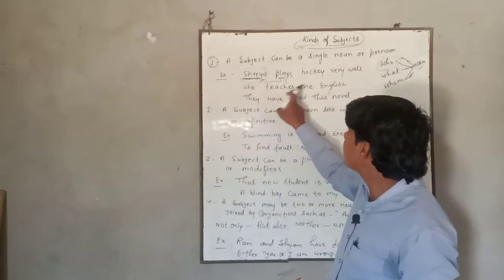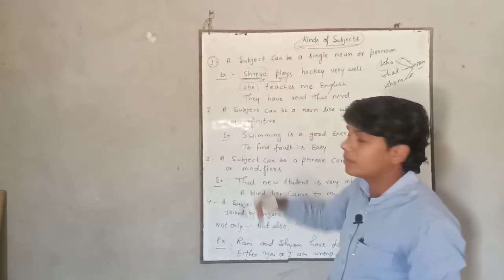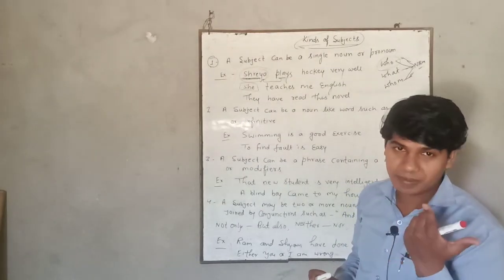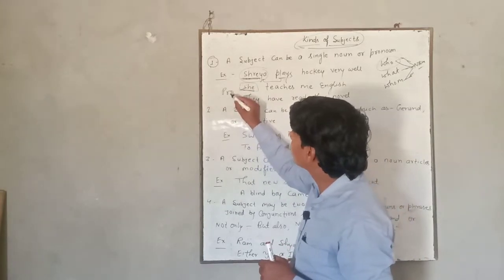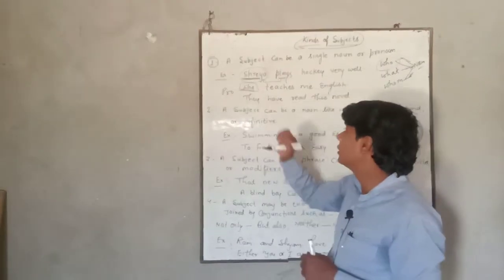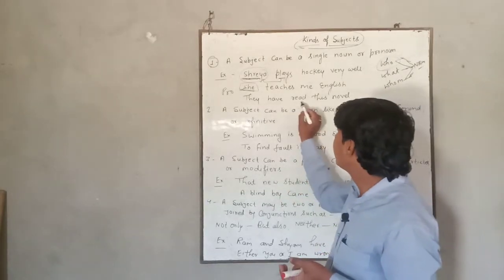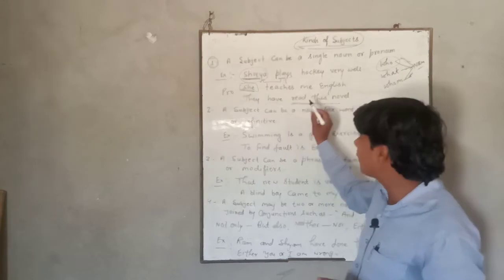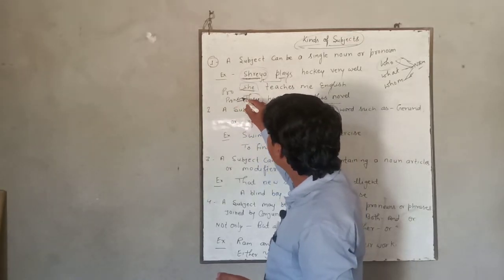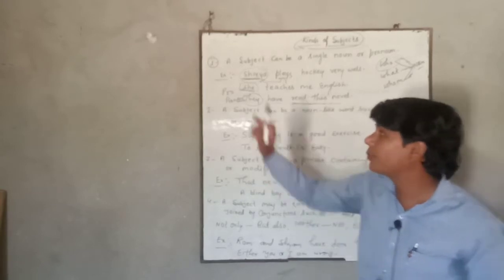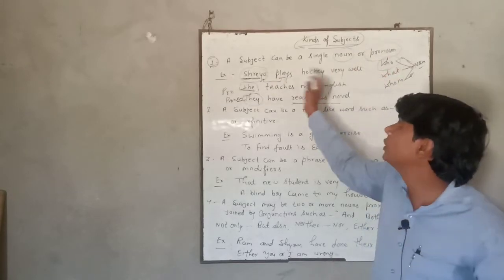Second example: 'Shriya teaches me English.' In that sentence, Shriya is the doer of the sentence, and the doer is the subject. Now sentence number three: 'They have read this novel.' If we talk about the action performed here, we find reading the novel. Who performed the action? We find 'they.' So 'they' is also a subject in the sentence and it is also a pronoun. Point one tells us that a single noun or pronoun can be used at the place of subject.